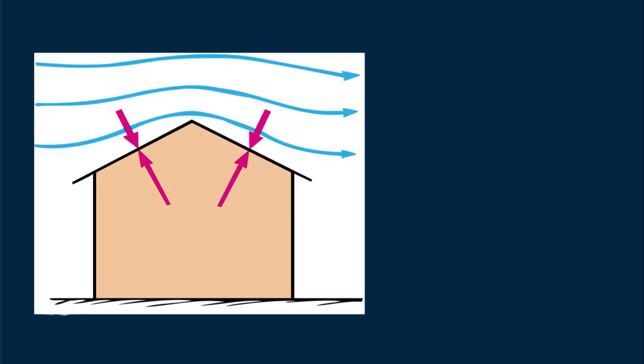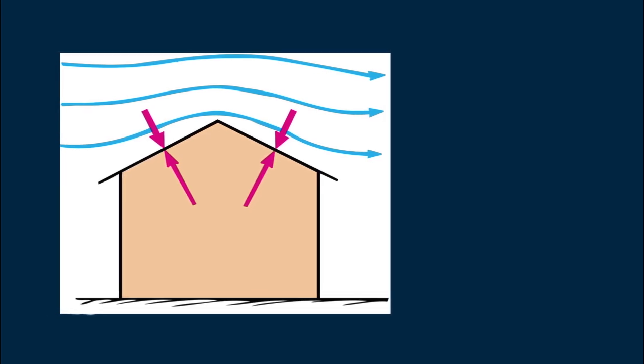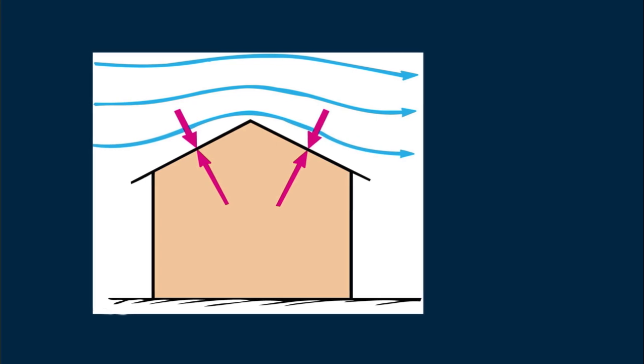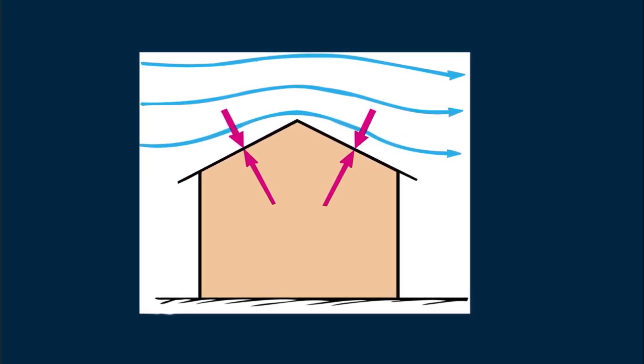Air flowing over the roof of this house passes through what for the air is a constricted region. What happens to pressure within the air as it gains speed? That's right, it is lowered. Look how the streamlines are closer together atop the roof.